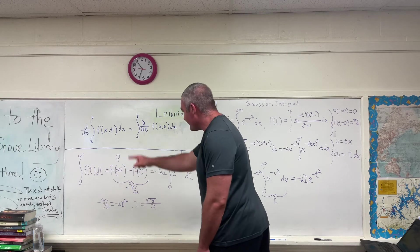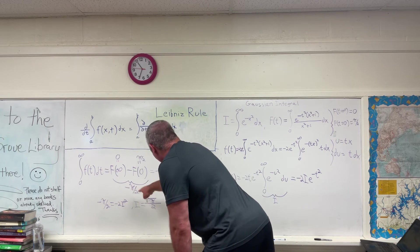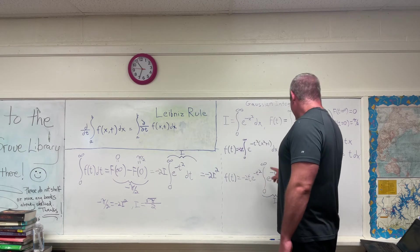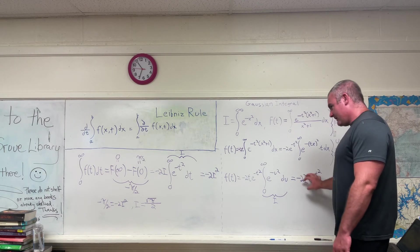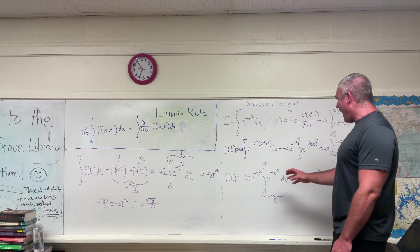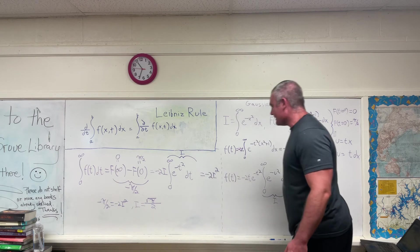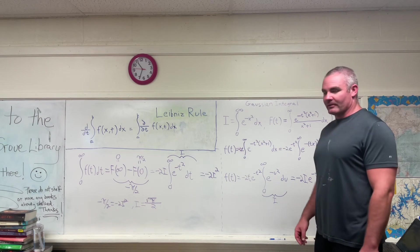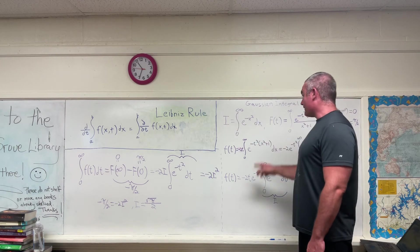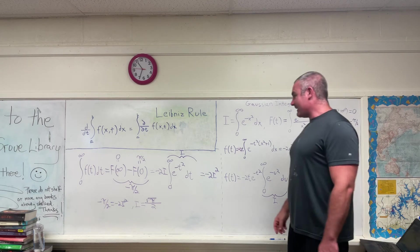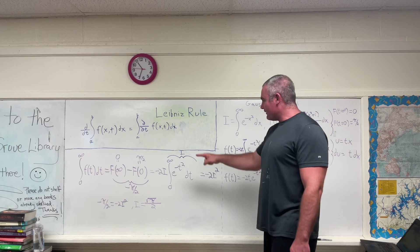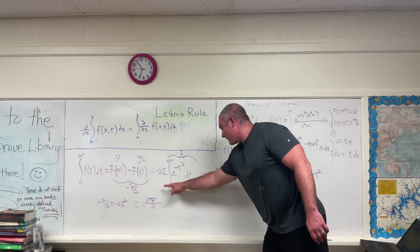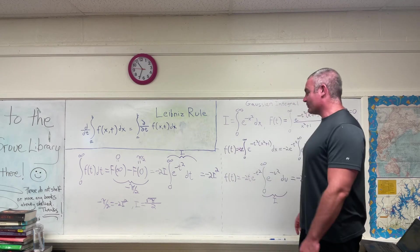That's equal to this thing right here — the integral from zero to infinity of this expression. We can bring out negative 2I outside of the integral because it doesn't depend on T. We're integrating with respect to T, so I is a constant. What we get is negative 2I times the integral from zero to infinity of e to the negative T squared DT, which is also equal to I. So this whole thing is equal to negative 2I squared.